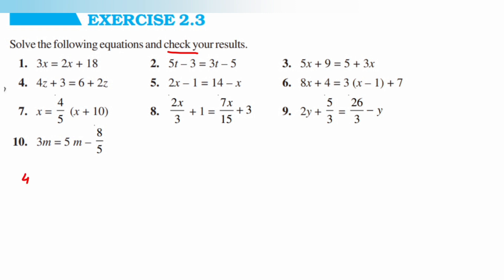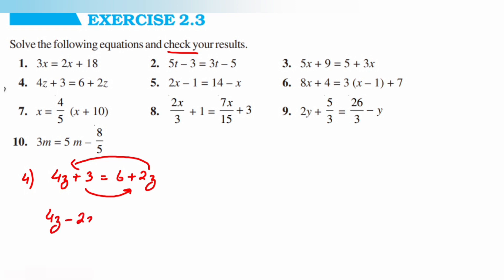The fourth question is 4z plus 3 is equal to 6 plus 2z. Transpose 2z to the left side and 3 to the right side, giving 4z minus 2z is equal to 6 minus 3, so 2z is equal to 3. We want only z, so transpose 2 to the other side: z is equal to 3 upon 2.